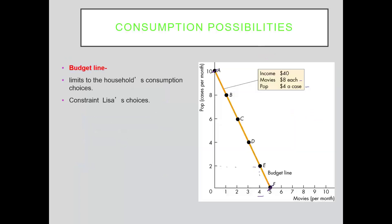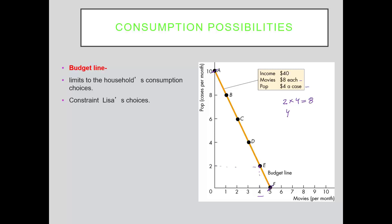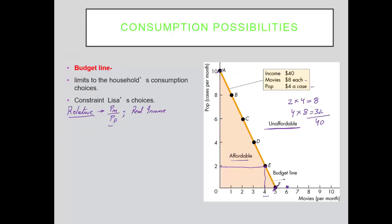Let's check how much Lisa spends at point E. At point E she is buying two drinks — price of drinks is four, so that's eight dollars — and going to four movies, where the price of movies is eight, so that's thirty-two dollars. Eight plus thirty-two equals forty dollars, so at point E she has spent all her money on the two goods. Lisa can afford all goods that lie on the budget constraint or inside it; everything outside the budget line is unaffordable.